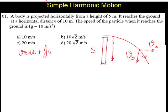v is equal to, because it is dropped from a height, we can take it as gt. g is 10, so it is simply 10t. This is the vy velocity.